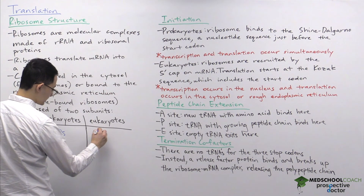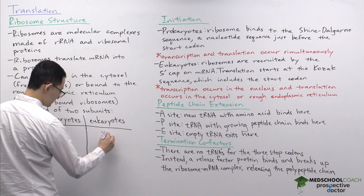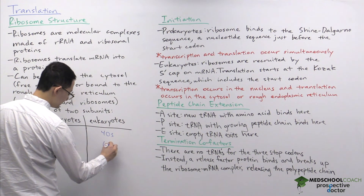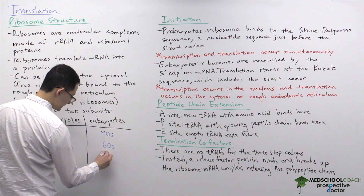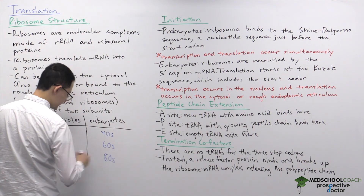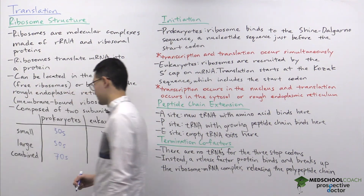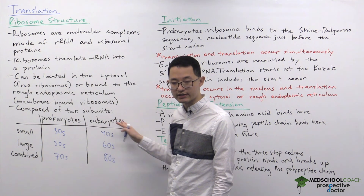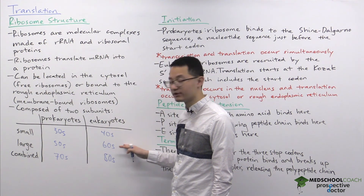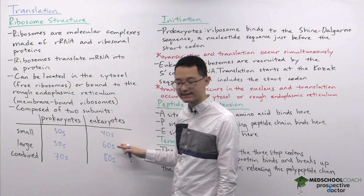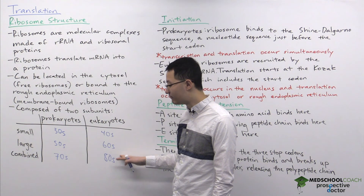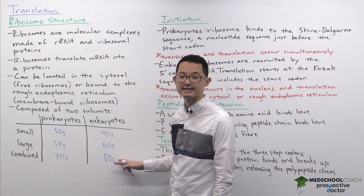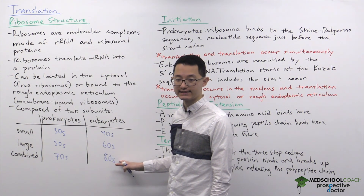Eukaryotes are similar, except with different numbers. The small subunit in eukaryotes is 40S, the large subunit is 60S, and the combined ribosome is 80S.